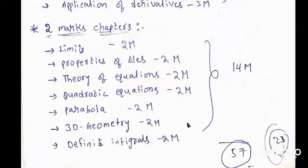Later on, two-mark chapters. The two-mark chapters are limits, properties of triangles, theory of equations, quadratic equations, parabola, 3D geometry, definite integrals. So from these seven chapters you will get total 14 marks.